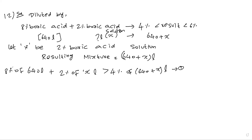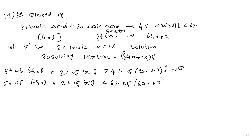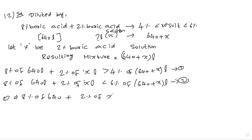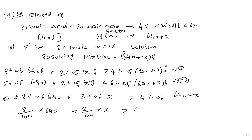For the second inequality: 8% of 640 liters plus 2% of x liters must be less than 6% of 640 plus x liters. So we have two equations to solve. First equation: 8 divided by 100 into 640 plus 2 divided by 100 into x is greater than 4 divided by 100 into 640 plus x.